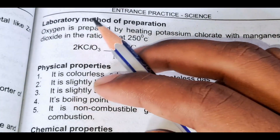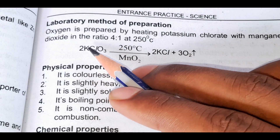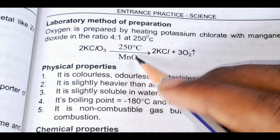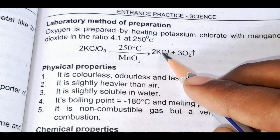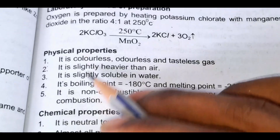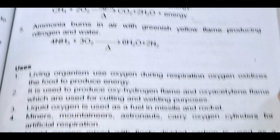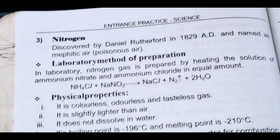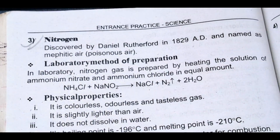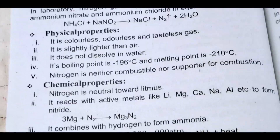Laboratory method of preparation: potassium chloride — potassium chloride plus oxygen. Physical properties, chemical properties, and uses. Nitrogen — preparation and properties.